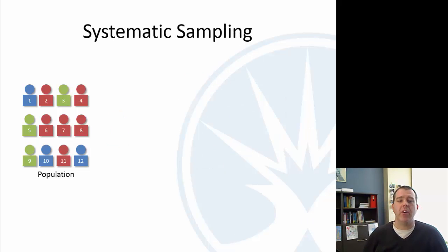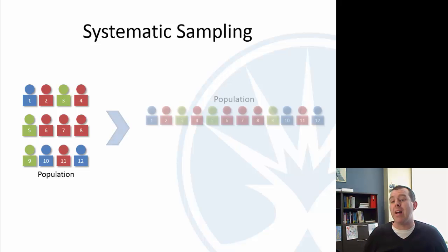Systematic is the next one. So, systematic is putting them all in line, and then choosing every so often. In this case, if I want to choose four of them, I would need to choose every third. And you can think about that if you just divide 12 by 4, it gives you 3. So, I'd need to choose every third.